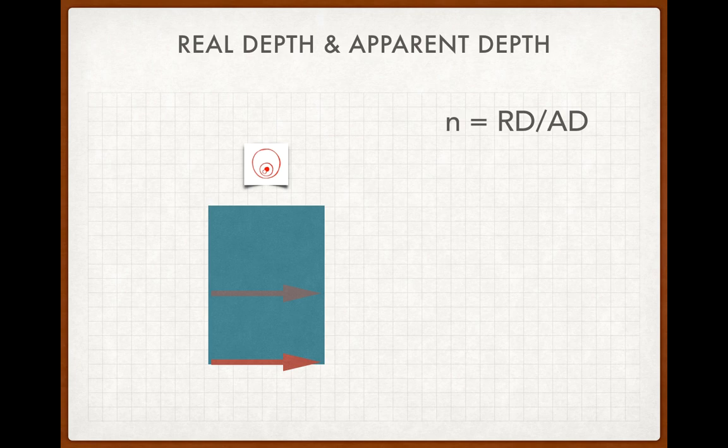Then you use a search pin, an identical pin, on the left-hand side next to the glass block. You move it up and down until you think that search pin is where the image of the pin underneath the block is.